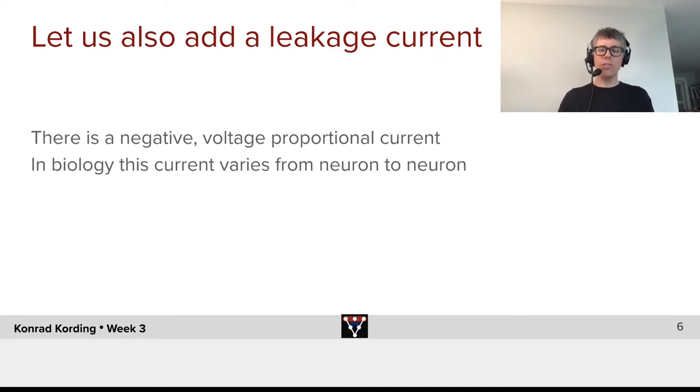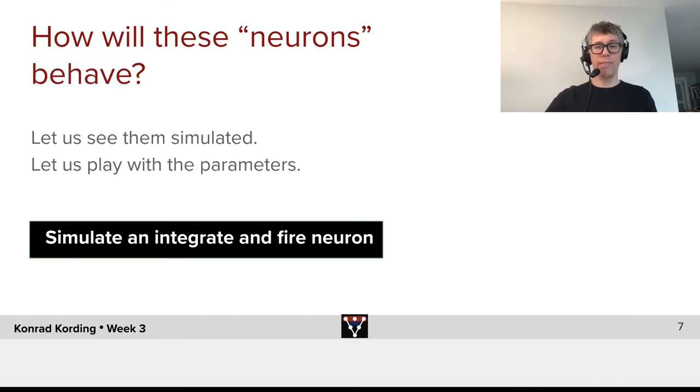Now, we will also add some leakage current. What that means is if the voltage is very high, it will go towards zero. If the voltage is very low, it will also go towards zero in the opposite direction. More precisely, there's a negative voltage proportional current. In biology, this is universally the case, and it varies in strength from neuron to neuron.